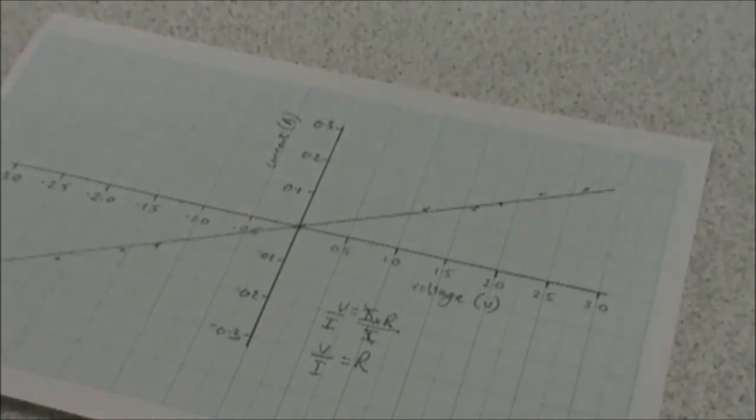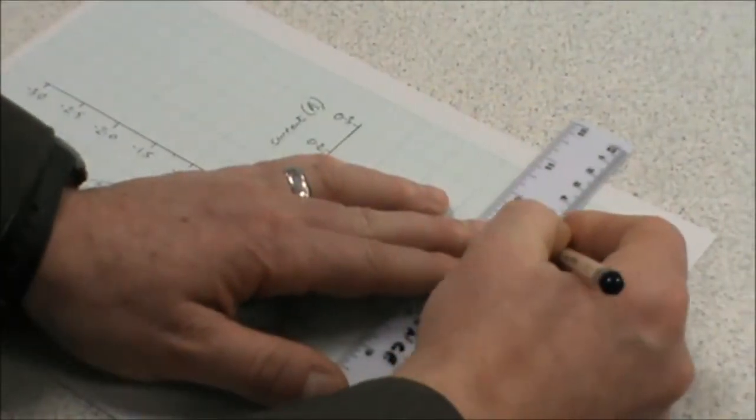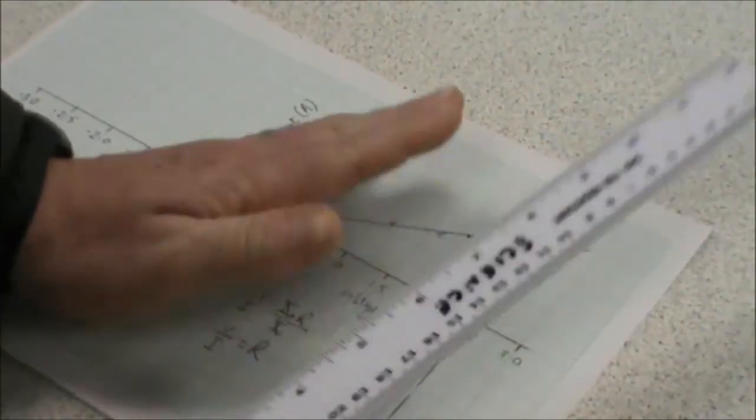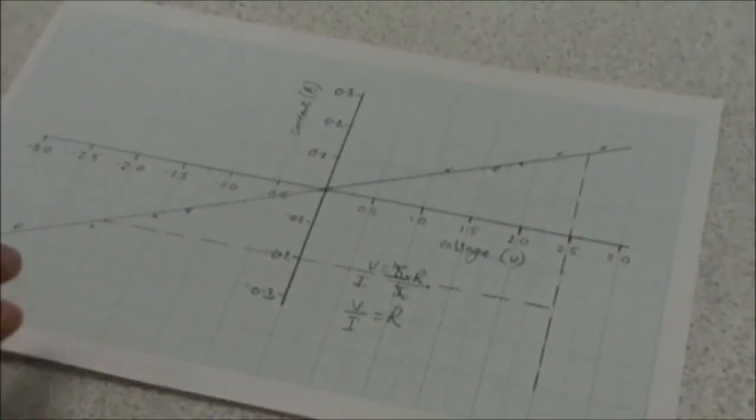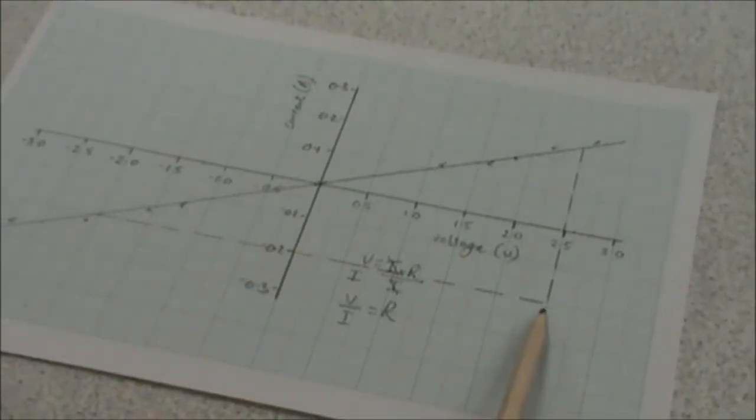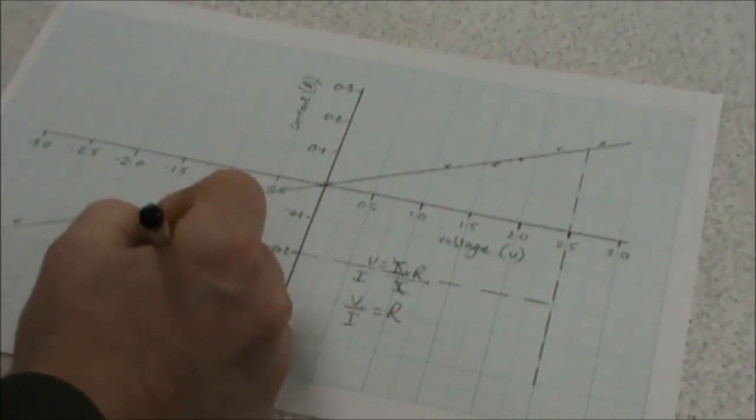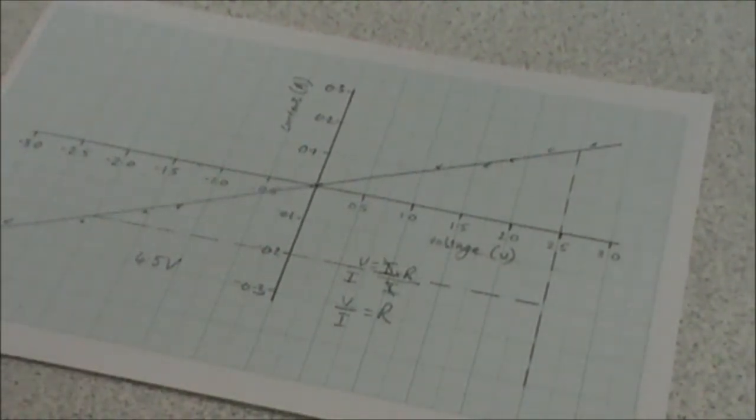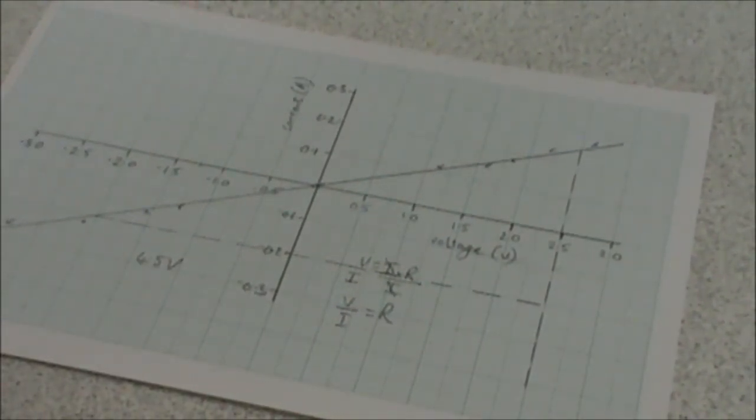We can then calculate the gradients of our graph using some values from our graph itself. So we draw a line vertically down there and we want to draw a line horizontally along there. You can choose these points at random but try to make them ones that are easy to use. So if we want to know our voltage, it goes from minus two to plus two point five, which is a total of four point five. And our current goes from plus two point five to minus two, which gives us a value of 0.45.